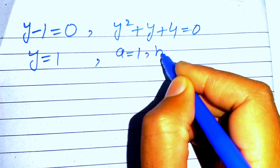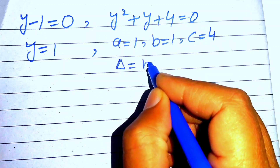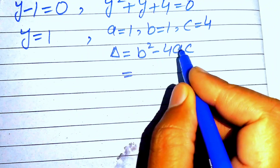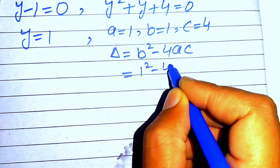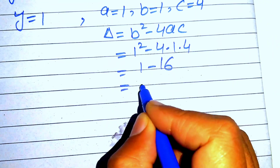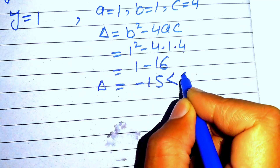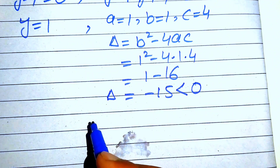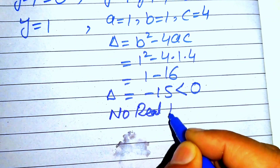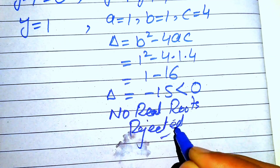For y² + y + 4 = 0, the coefficients are a = 1, b = 1, c = 4. The discriminant is Δ = b² − 4ac = 1 − 4·1·4 = 1 − 16 = −15. Since Δ < 0, this equation has no real roots, so we reject Case 2.